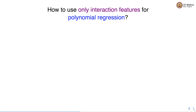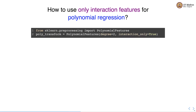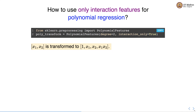The polynomial feature transformation gives us polynomial features of all degrees. Sometimes you want to exclude higher degree polynomial features corresponding to individual features and keep only interaction features. The polynomial features class has a parameter interaction_only in its constructor, which is by default set to false. If we want only interaction features, we should set this parameter to true. For example, with two features x1 and x2, setting interaction_only to true gives a transformation containing features 1, x1, x2, and x1*x2. Note that x1 squared and x2 squared are excluded.